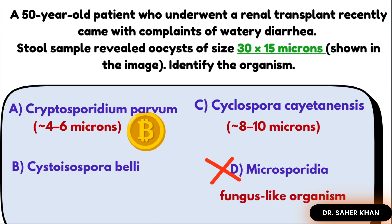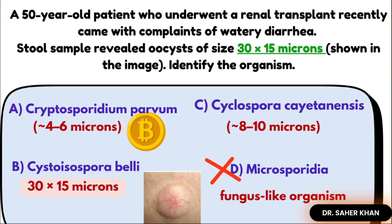The third is cystoisospora. 'Cysto' sounds like a cyst, and cysts are usually big — so you can remember it that way. Cystoisospora's size is around 25 × 20 microns, which closely matches the given size, so the answer is Cystoisospora belli.